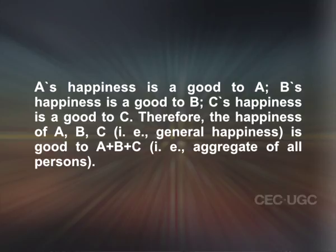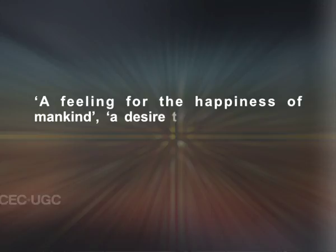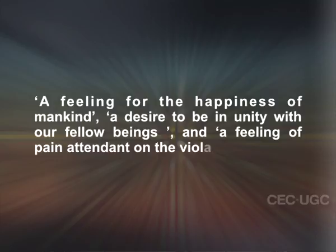Mill holds that we are bound to promote the general happiness because of the sanctions of morality. There are, according to Mill, two kinds of sanctions for altruistic conduct: external and internal. Bentham recognizes four external sanctions — physical, social, political, and religious — but an appeal to these sanctions means an appeal to the self-interest of the individual. Mill has added to these external sanctions the internal sanction of conscience. This internal sanction, according to Mill, is a feeling for the happiness of mankind, a desire to be in unity with our fellow beings, and a feeling of pain attendant on the violation of duty. Mill has also given a psychological explanation of the transition from egoism to altruism — altruism grows out of egoism.